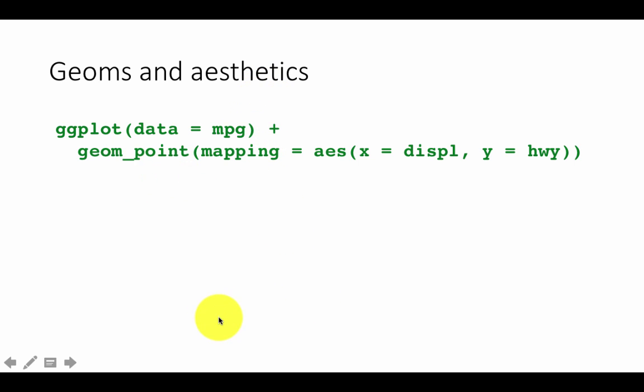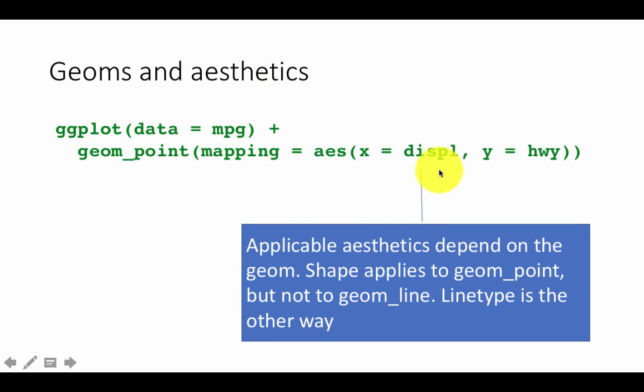Okay. So geoms and aesthetics, that's what we are seeing here. And as I had mentioned earlier, the applicable aesthetics depend upon the geom. So for example, shape aesthetic applies only to geom_point. You cannot apply the shape aesthetic to a geom_line. That would not make any sense. Similarly, line type is an aesthetic that applies only to line plots or plots that end up as lines, but it cannot apply to geom_point and so on. So different geoms use different sets of aesthetics. Okay. So if you see an error message, then you'll know what happened.